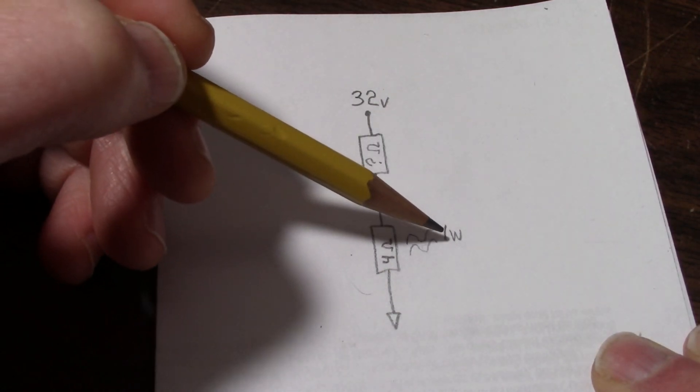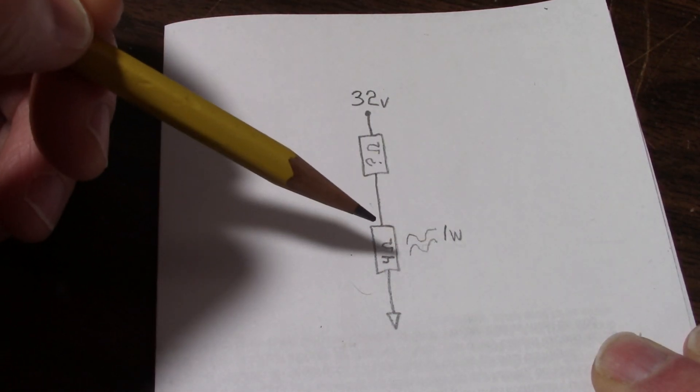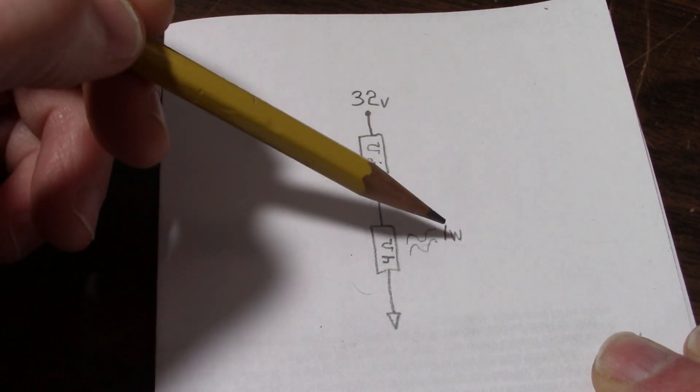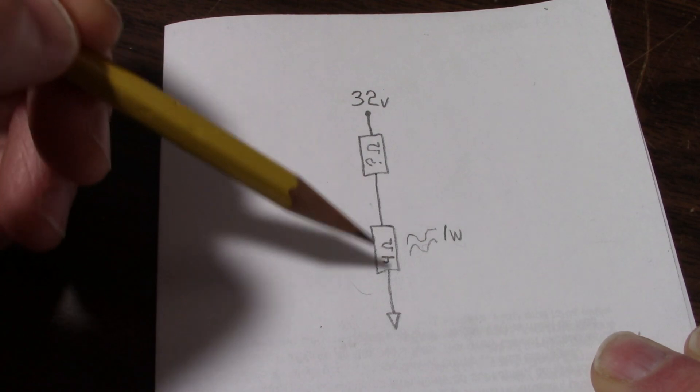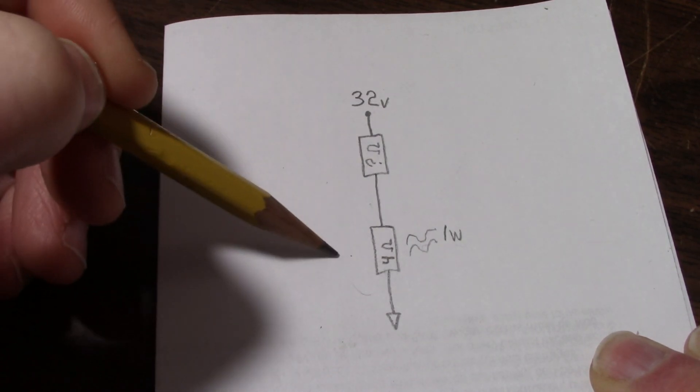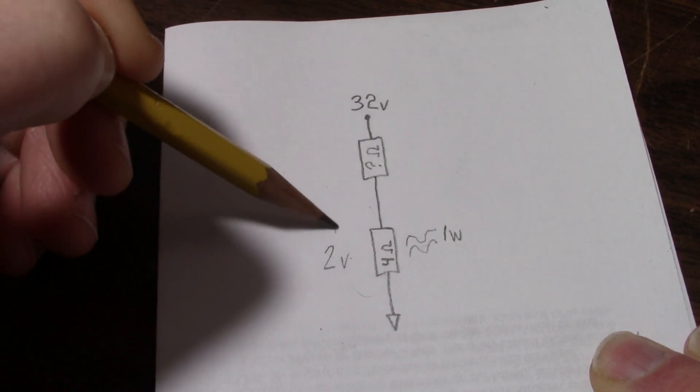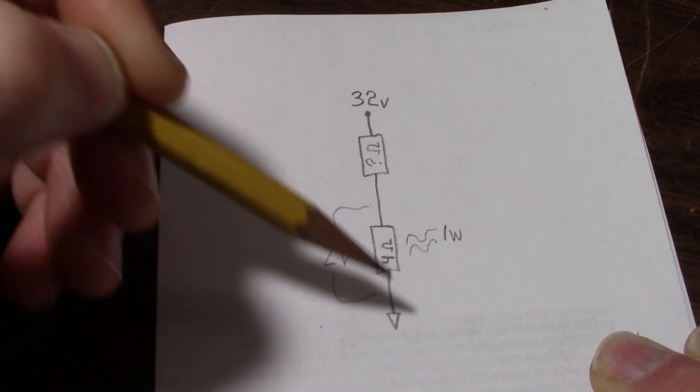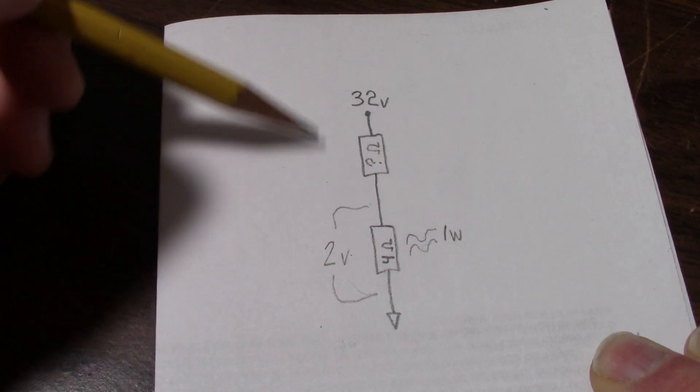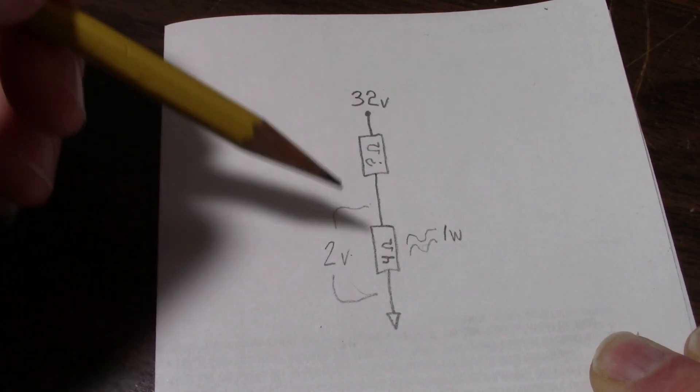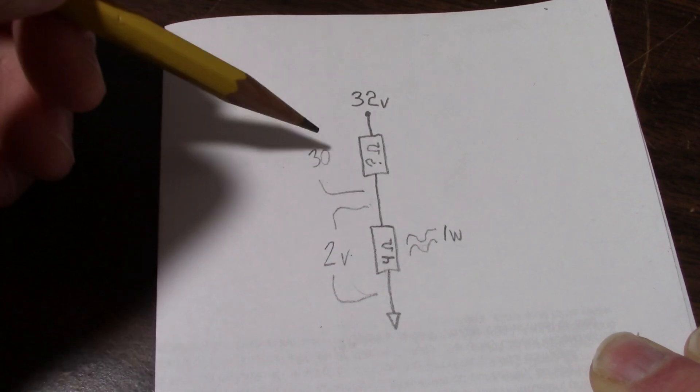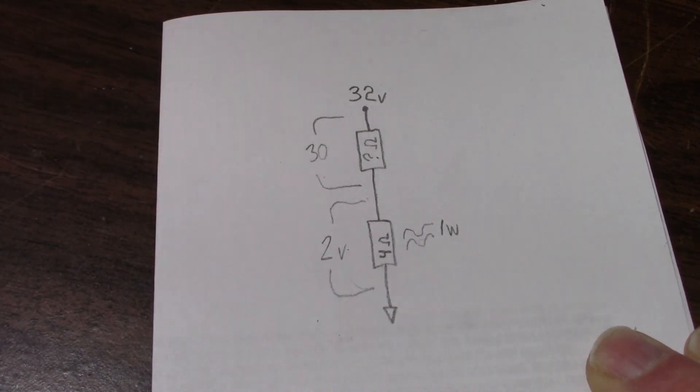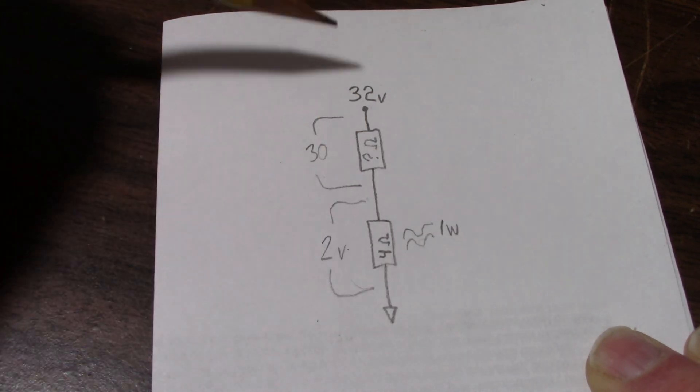So I know we have 1 watt, 4 ohms, so 1 times 4, take the square root of that, that's a 2 volt drop across this resistor here. So now I know the voltage drop across this one because it's 32 minus 2, so 30 volts.